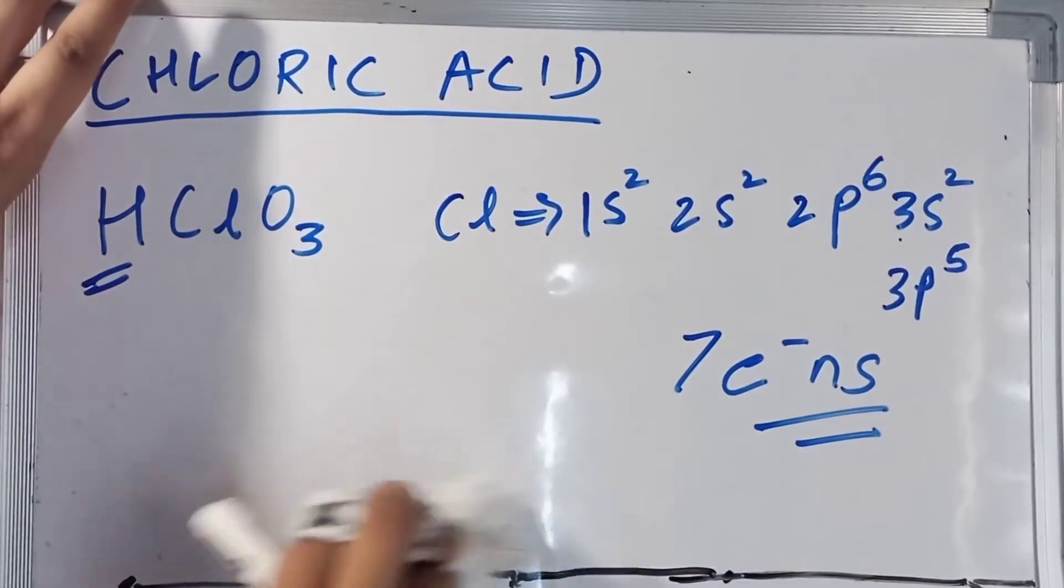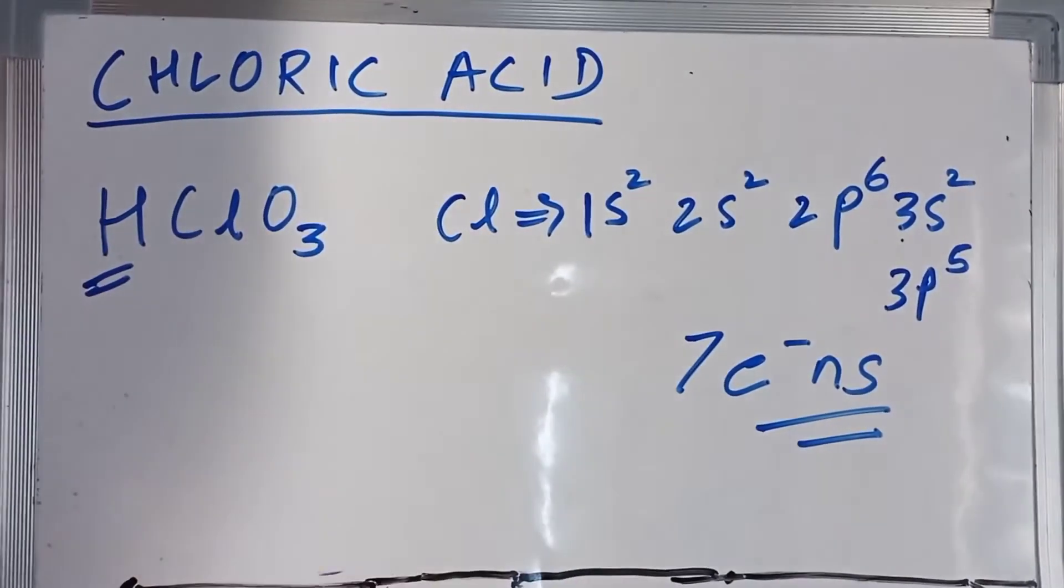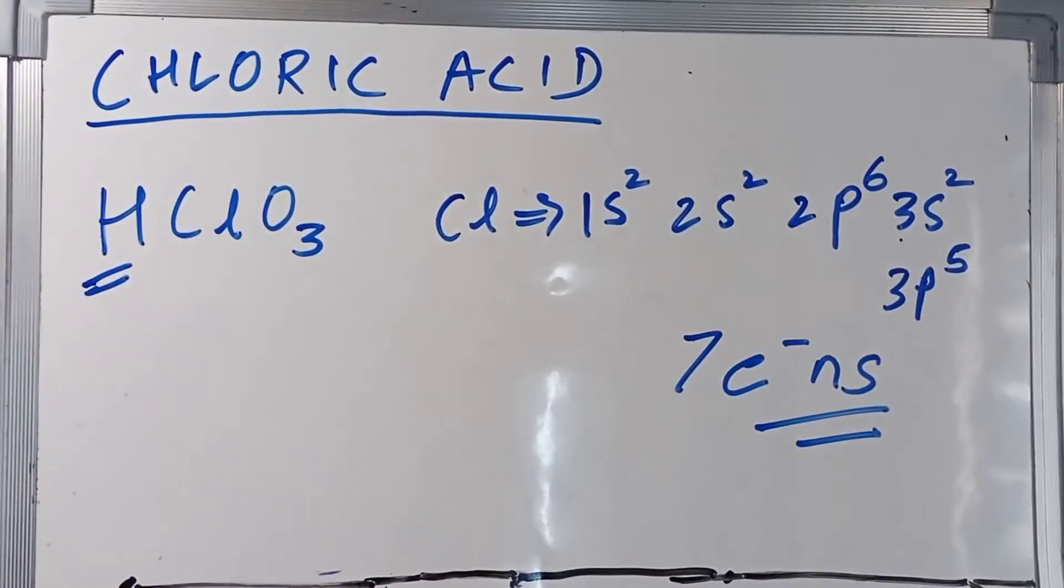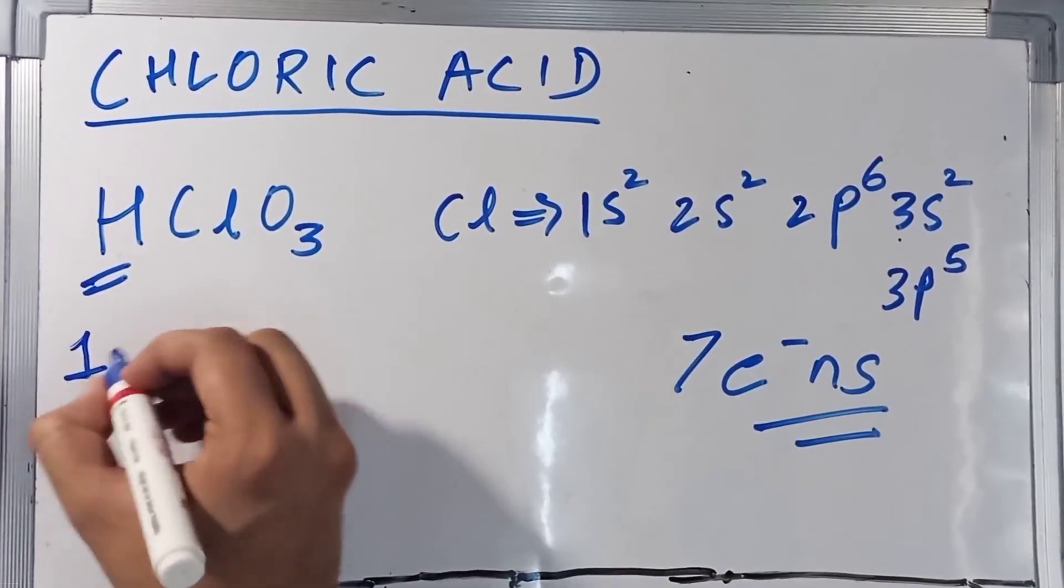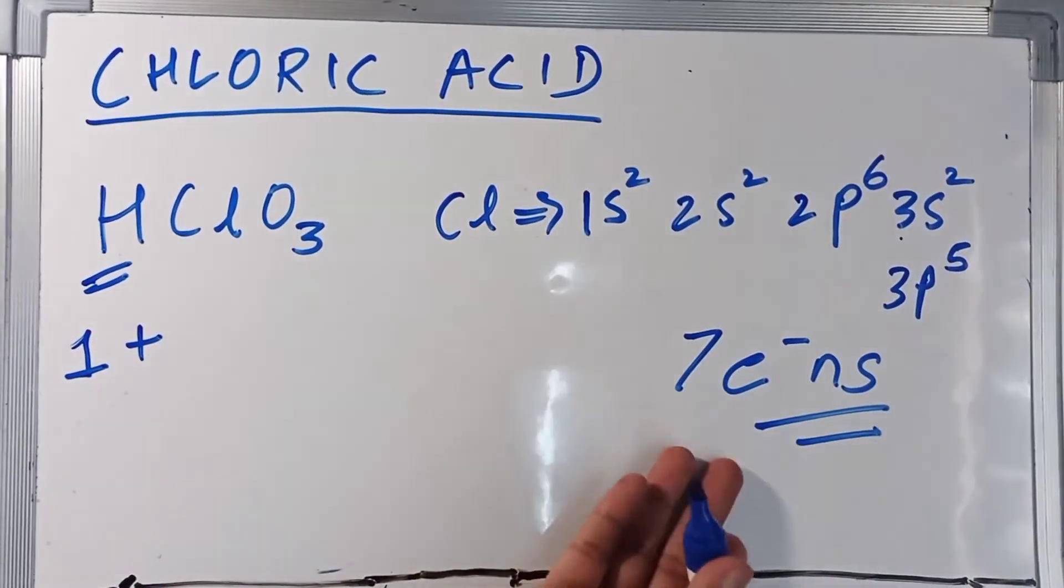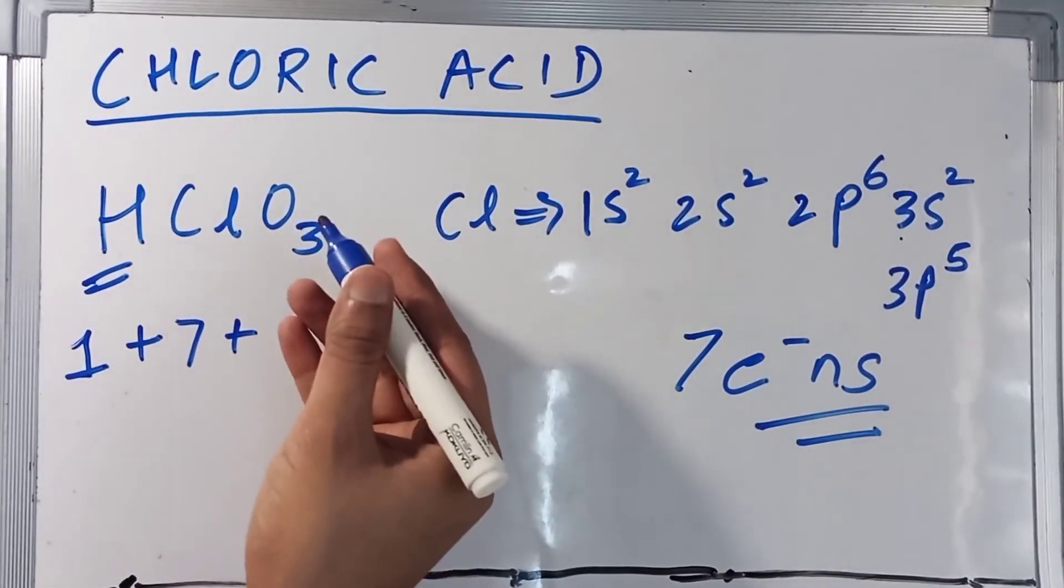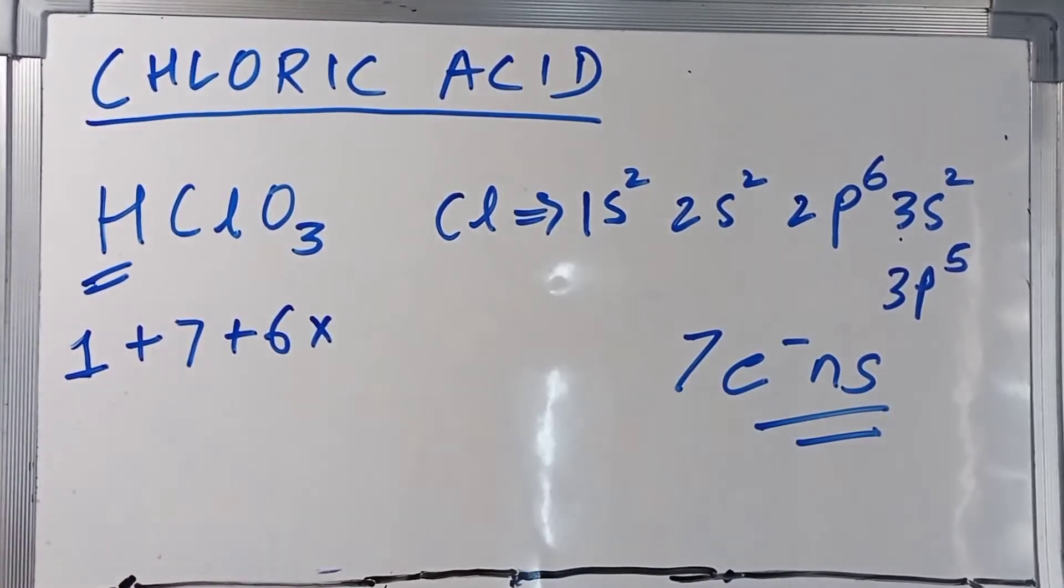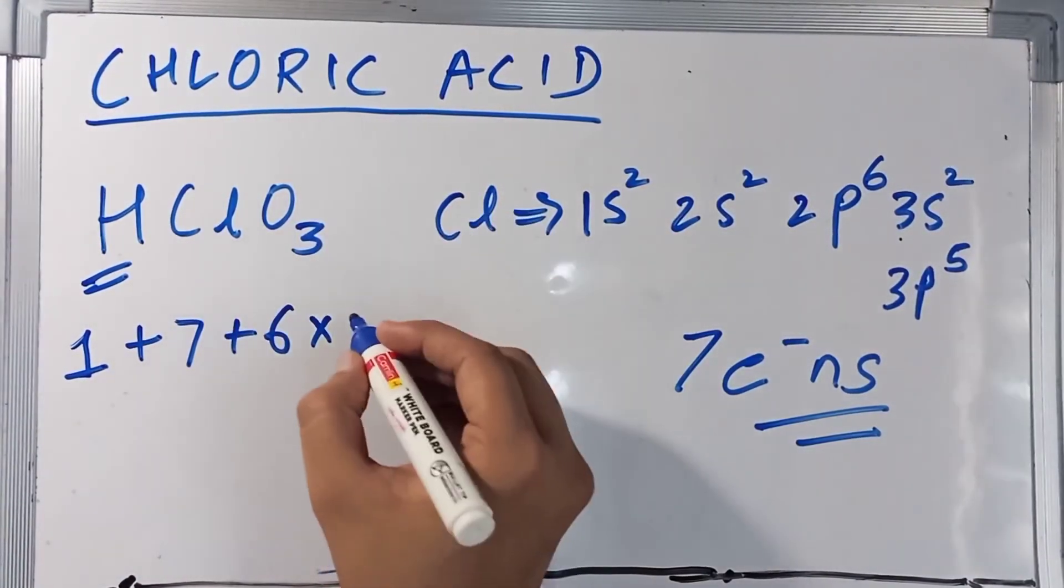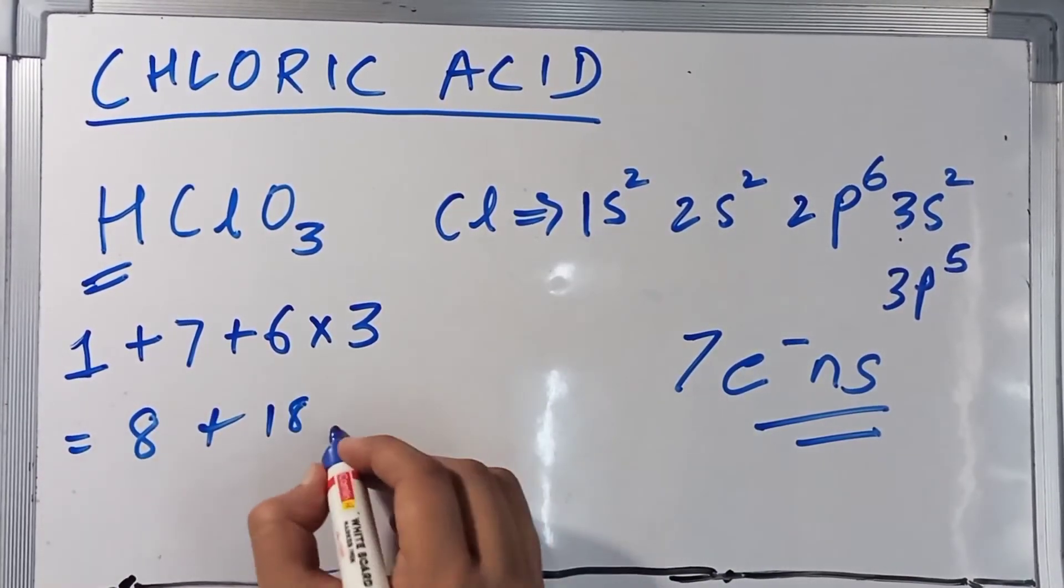In order to do that we are going to find out the hybridization. So for hybridization we are going to count the number of valence electrons. In hydrogen we have 1. In chlorine we have 7 electrons—in valence shell 2 plus 5, 7. In oxygen we have 6. And there are 3 atoms of oxygen, so we are going to multiply this 6 by 3. Now, 8 plus 18, which is 24.